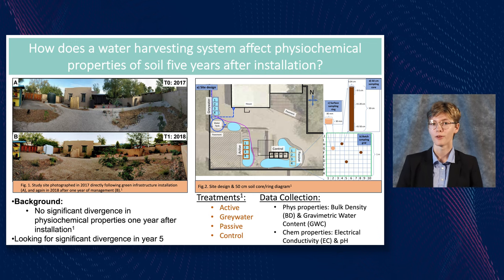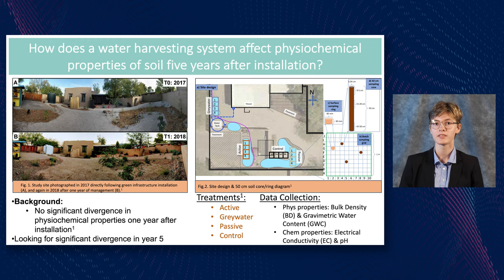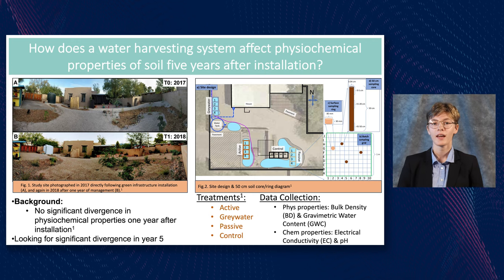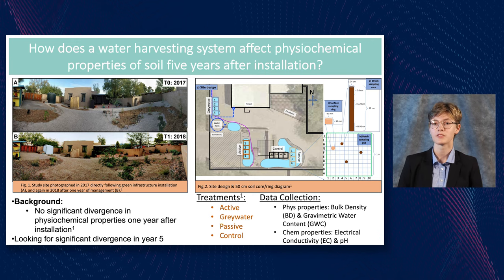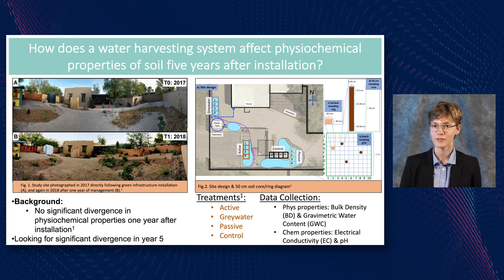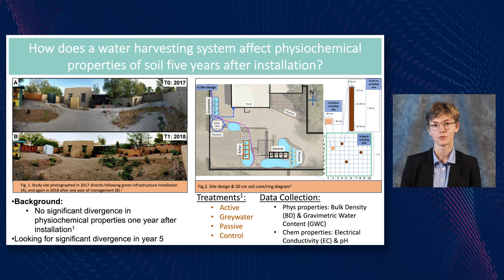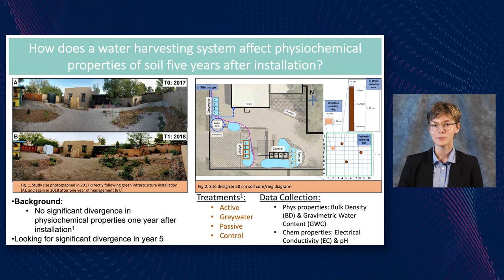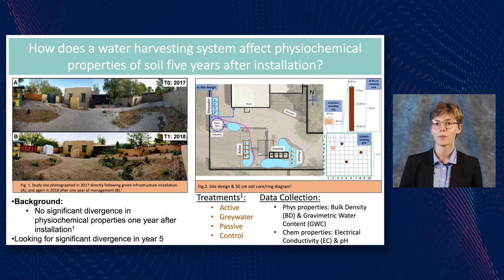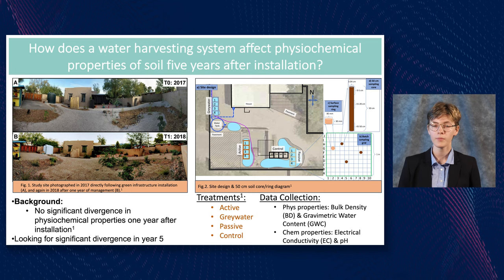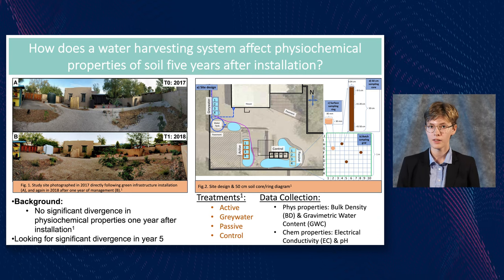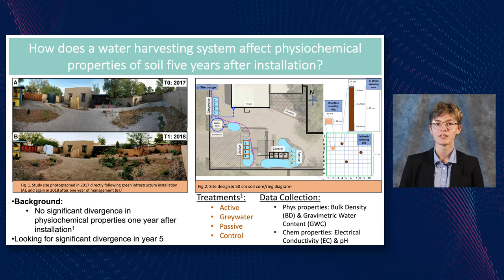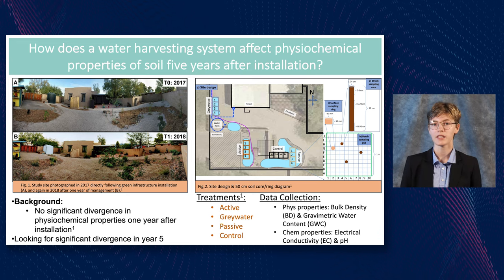At this site there are four treatment groups: the active basin, which receives rooftop runoff water; the graywater basin, which receives used laundry water; the passive basin, which receives incidental rain; and the control, which is an unaltered landscape that also receives incidental rain. The properties we assessed were gravimetric water content, bulk density, electrical conductivity as a measure of salinity, and pH.